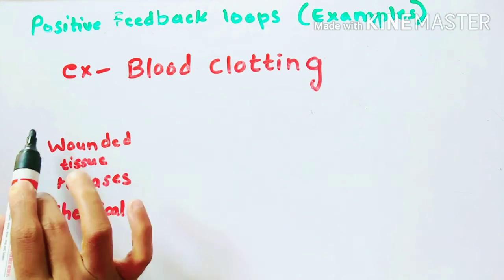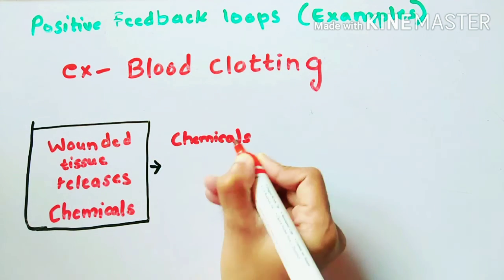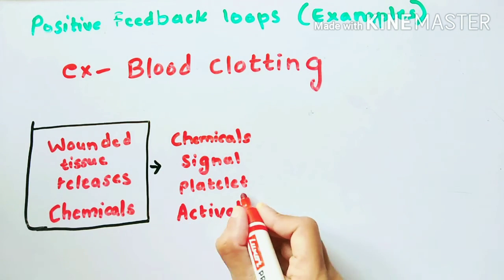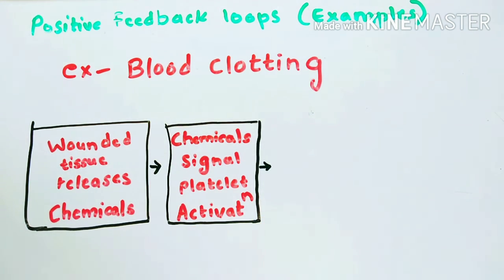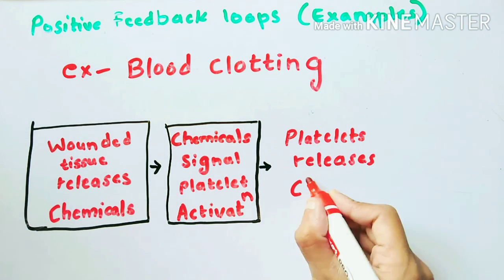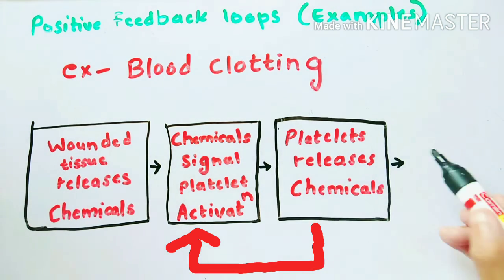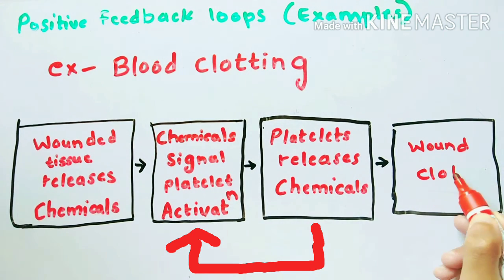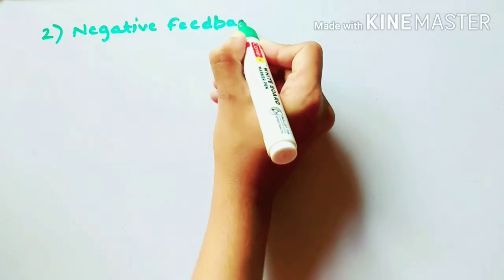The third example is blood clotting. When tissue is torn or injured, a chemical is released. This chemical causes platelets in the blood to activate. Once these platelets have activated, they release a chemical which signals more platelets to get activated, and this continues until the wound is clotted.